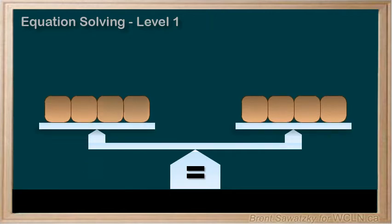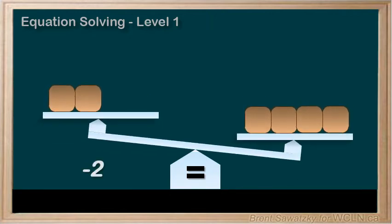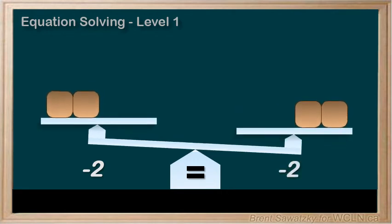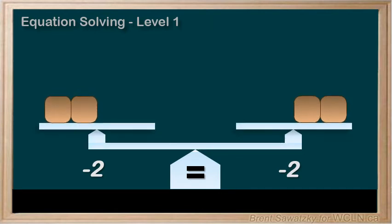If I subtract two from the left, what would I have to do to the right? Again, the goal is to keep it balanced. So removing two from the right would accomplish this, and we're back to equal.